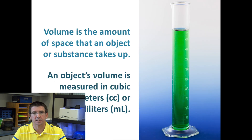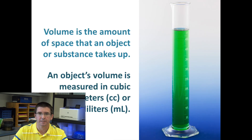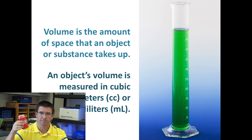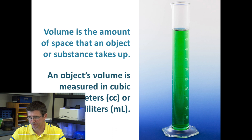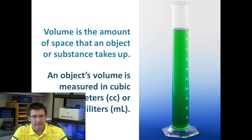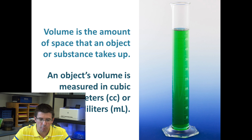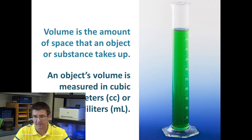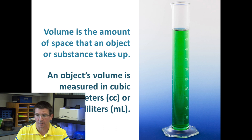Volume, on the other hand, tells us how much space an object takes up. If I have this can sitting on the table, it's taking up a certain amount of space in the room — that would be the object's volume. We measure that differently depending on whether we're talking about a solid object like a soda can or a liquid like the amount of coke that's in the can.